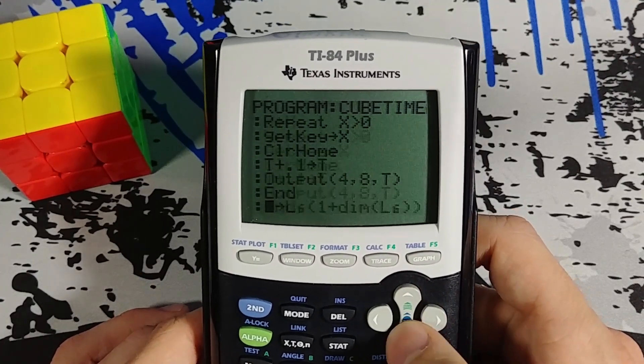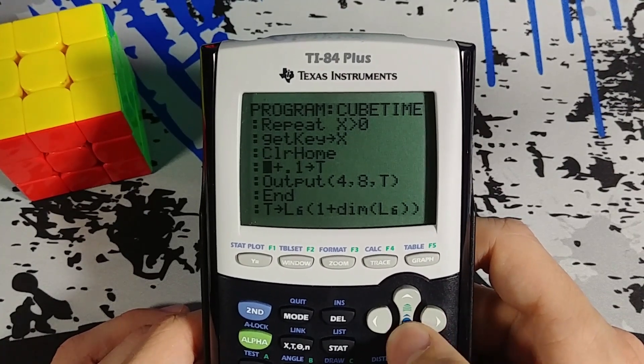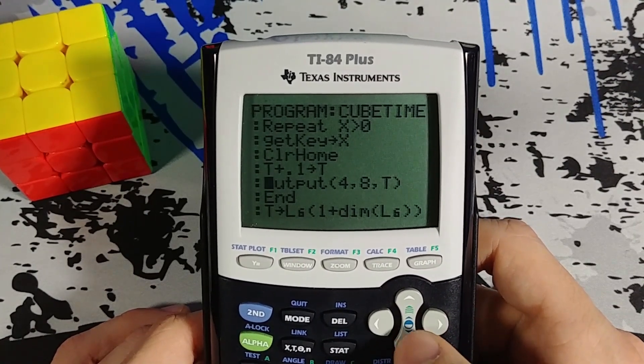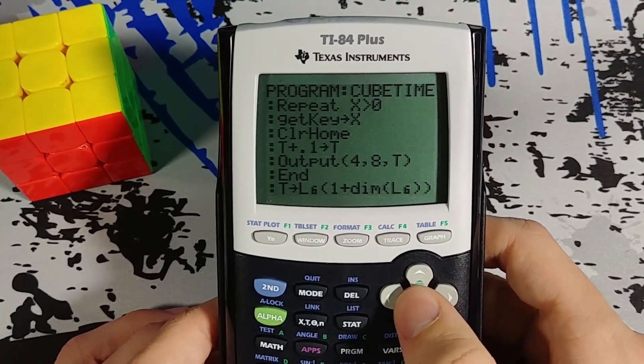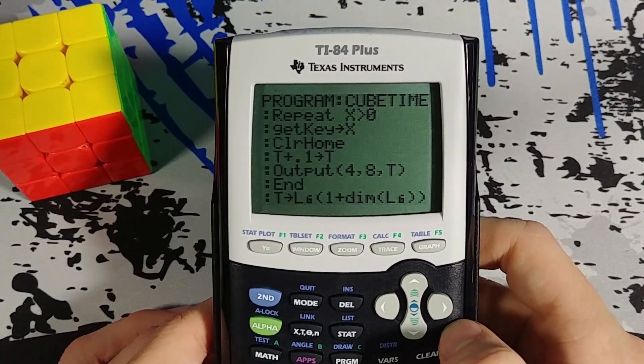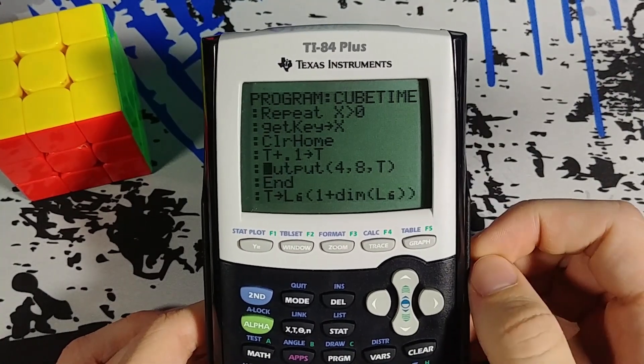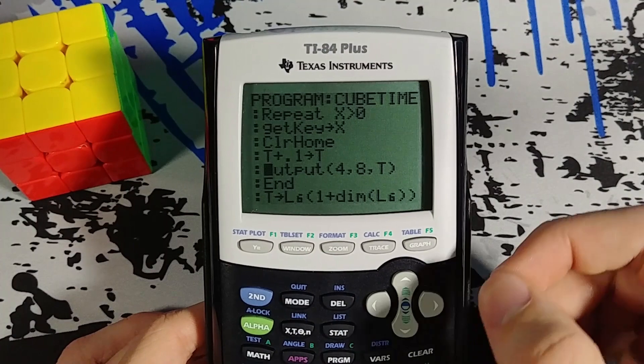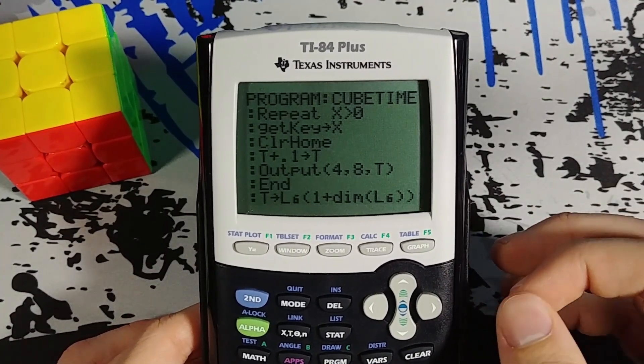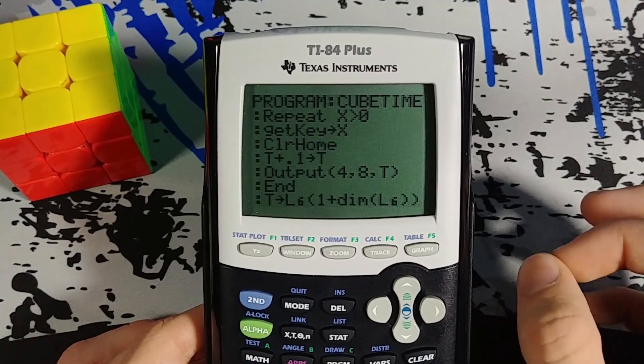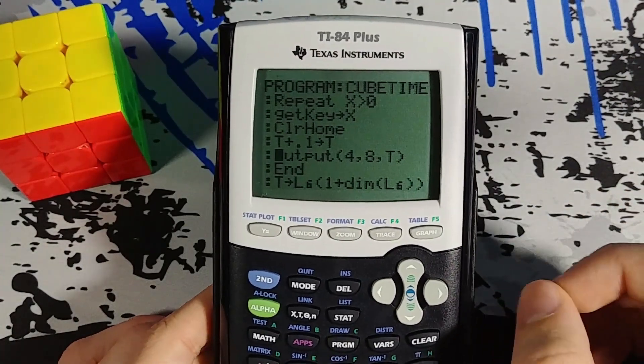Then here's my timer function. I clear the home screen, add 0.1 to t, and output t. So the timer works because I found out through using my camera and a timer that if you clear the home and add a value to a variable and keep displaying it, it'll actually conveniently fire like 10 units a second. So my timer is accurate down to the tenth of a second.